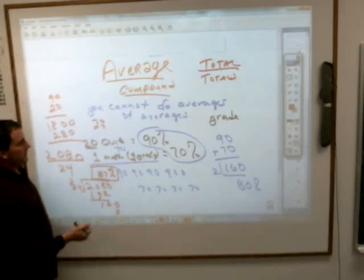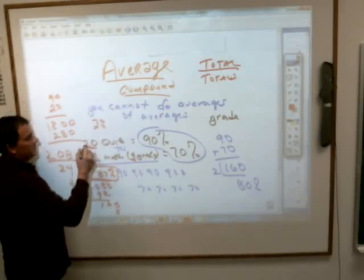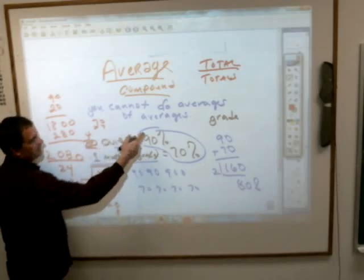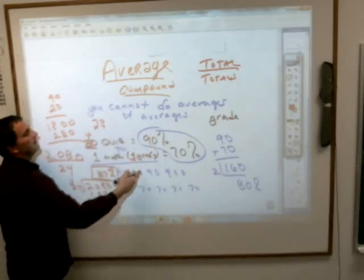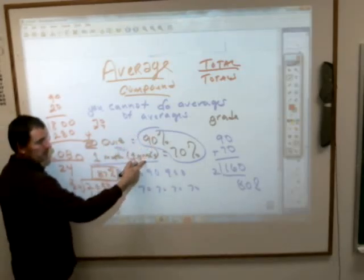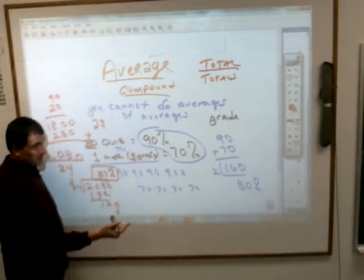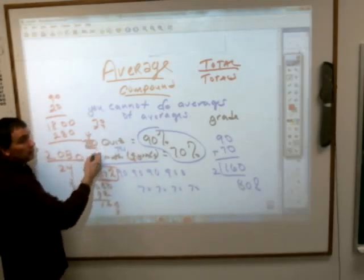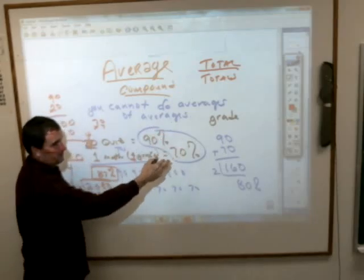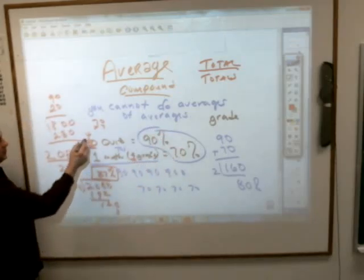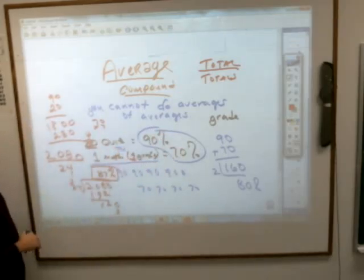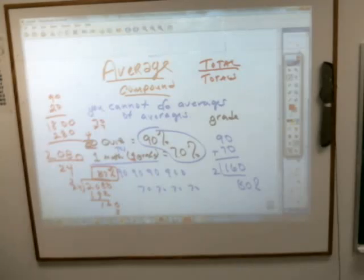When would averaging averages work? If there's the same number of grades. If by some chance you had four quiz grades at 90% and four test grades — because a math test is worth four grades — then you could do it. As long as there's an equal amount, it's going to balance out to be that same 80%. But when there are so many more of one than the other, it won't work.